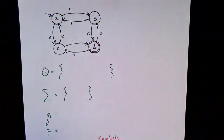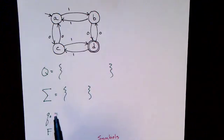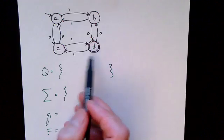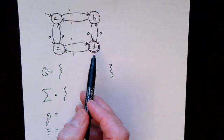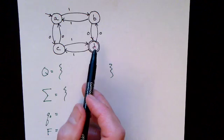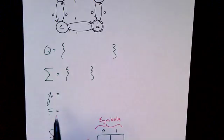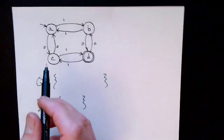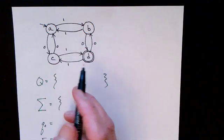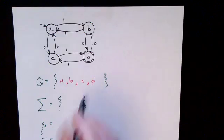Now let's take our example finite state machine and specify it formally. Final states are indicated with a double circle, so we can see which states are our final states. We have to specify five things: Q, sigma, q sub zero, F, and delta. First, we need a set of states. Our states are labeled, so we have four items: A, B, C, and D.